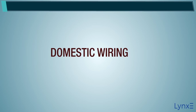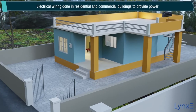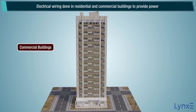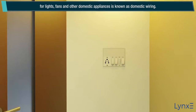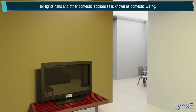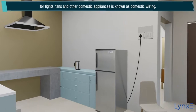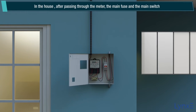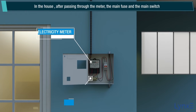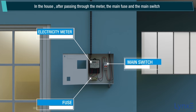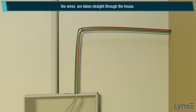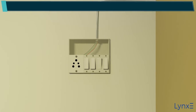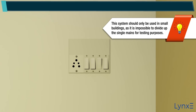Domestic Wiring: Electrical wiring done in residential and commercial buildings to provide power for lights, fans, and other domestic appliances is known as domestic wiring. In the house, after passing through the meter, the main fuse, and the main switch, the wires are taken straight through the house. Note: This system should only be used in small buildings, as it is impossible to divide up the single mains for testing purposes.